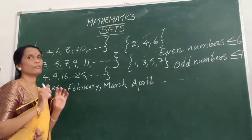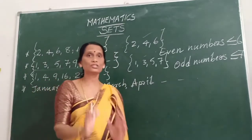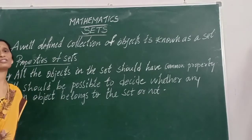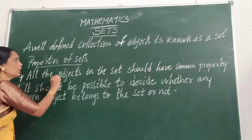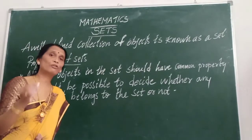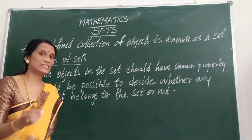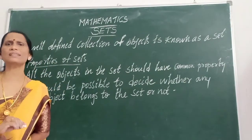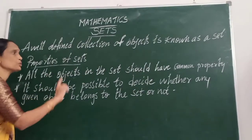This type of well-defined collection of objects is known as a set — that is what we have to learn in this chapter. A set is a well-defined collection of objects. All the objects in the set should have a common property; all the elements or members follow that property. We must be able to decide whether a particular element belongs to that set or not. It should be possible to decide whether any given object belongs to the set or not.